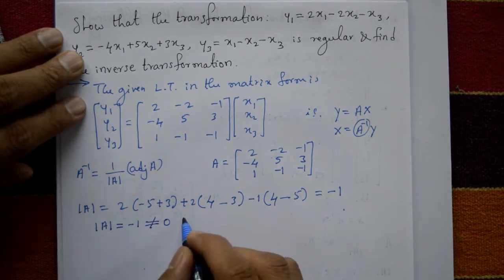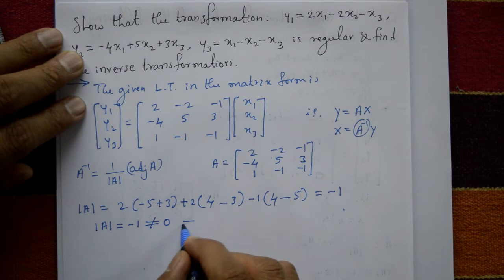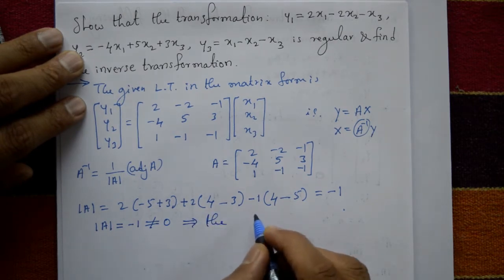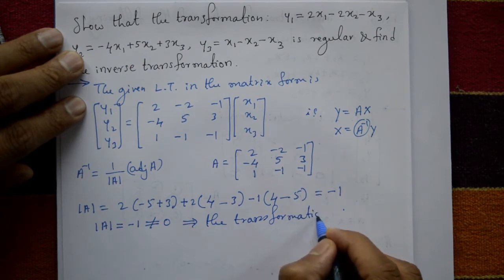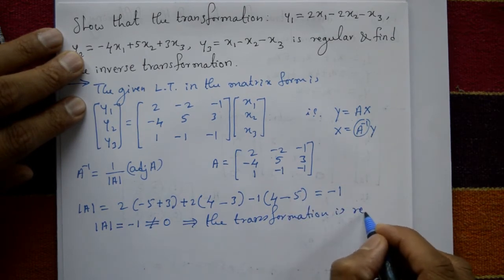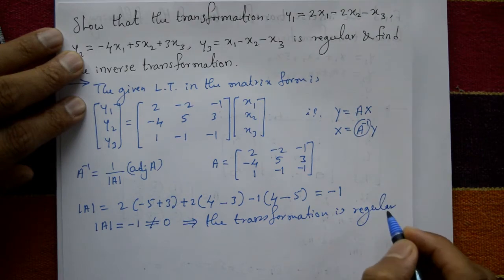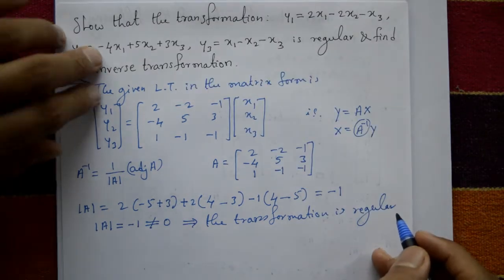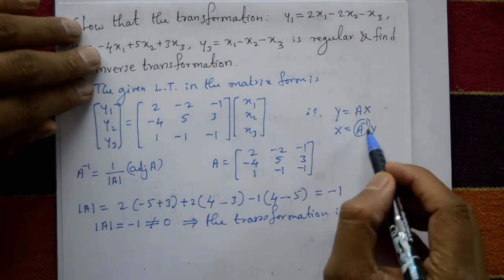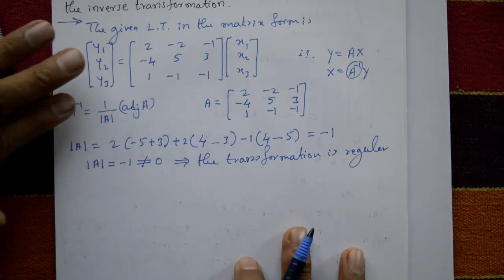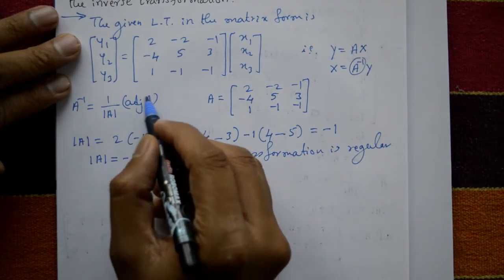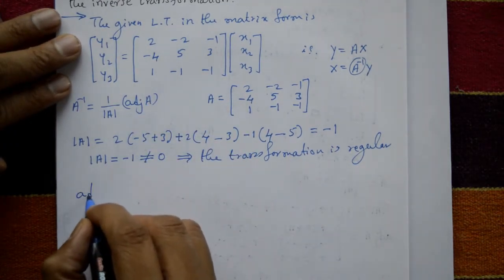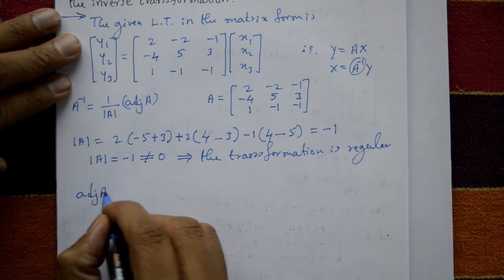Therefore the determinant of A equals -1, which is not equal to 0. That means the transformation is regular. Now find the inverse of matrix A. The determinant is done; next we find the adjoint of A.